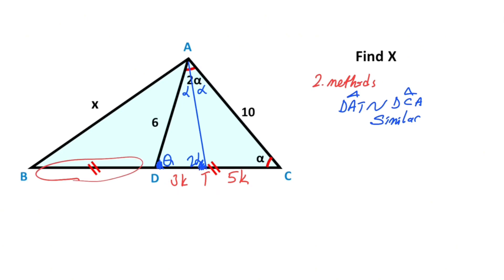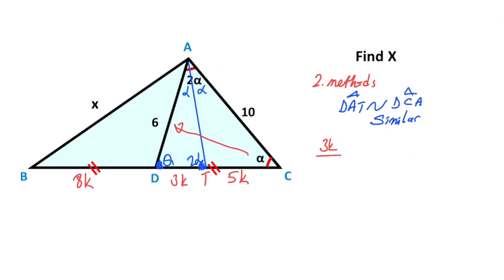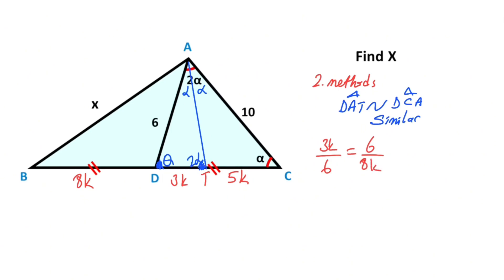You know that these two parts are equal, so here is also 8k. Now we can apply the similarity theorem: 3k, which is opposite alpha, over 6, which is opposite alpha, must equal 6, which is opposite 2α, over 8k, which is opposite 2α. If you simplify the expression: k squared equals 3 over 2, which means k equals √(3/2).